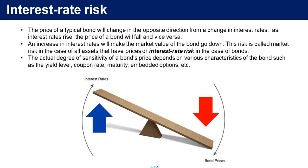In the case of bonds this is called interest rate risk, and market risk in the case of all assets that have perceptible market values. The actual degree of sensitivity of a bond's price depends on various characteristics of the bond, such as the yield level, coupon rate, maturity, embedded options, etc. We're going to talk about these in detail later in the course.